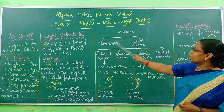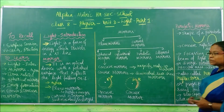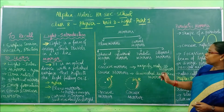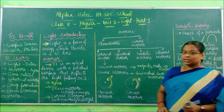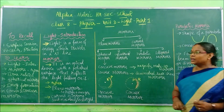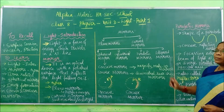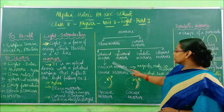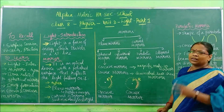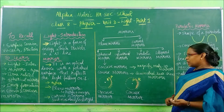Mirrors are classified into plain mirrors and curved mirrors. Curved mirrors are again divided into four types: spherical mirrors, cylindrical mirrors, parabolic mirrors, and ellipsoid mirrors. We are going to learn about spherical mirrors in detail and parabolic mirrors briefly. The other two types you will learn in your other classes.